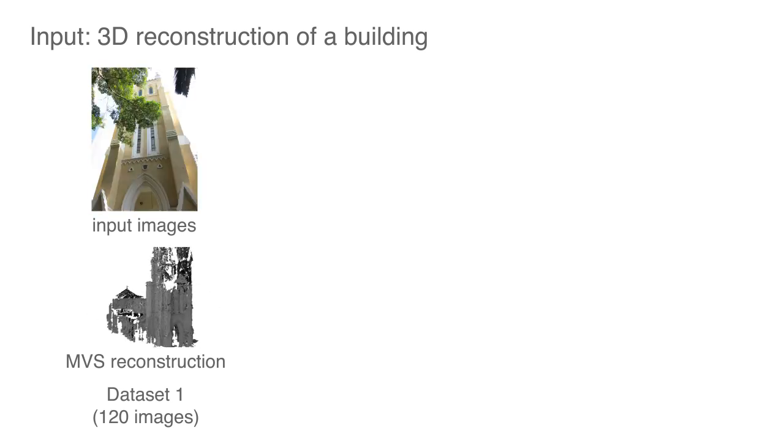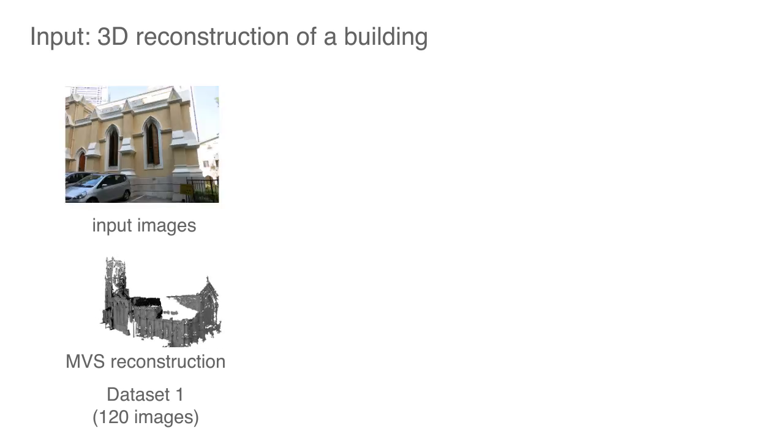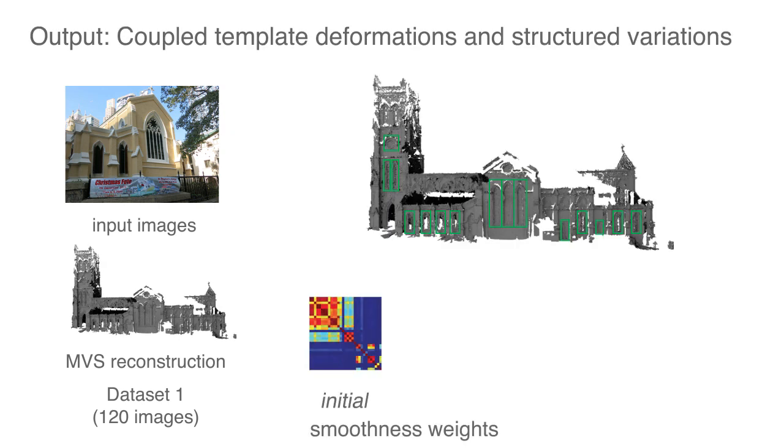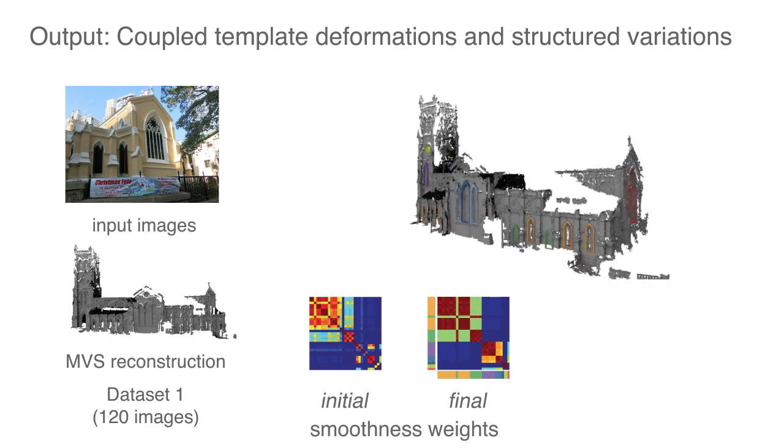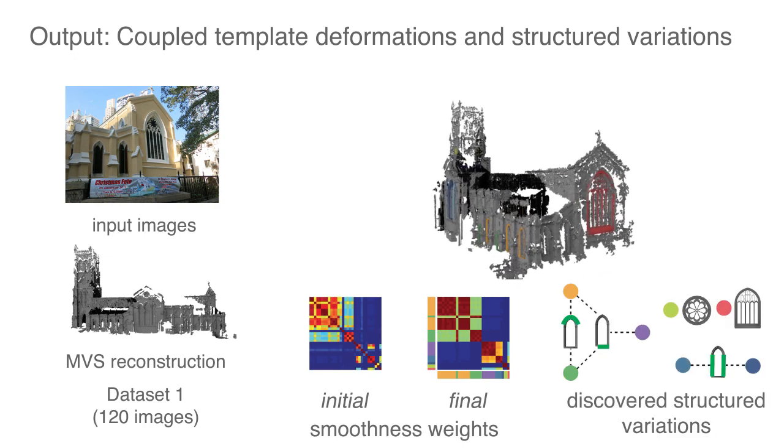Given a multi-view stereo reconstruction of a building, we propose a coupled template matching and deformation analysis to establish geometric similarities among building elements such as windows. This analysis discovers element similarities by detecting patterns in the deformation modes of their matching templates.